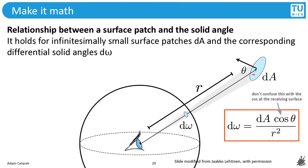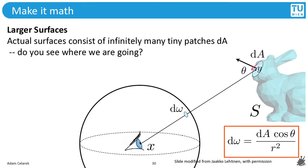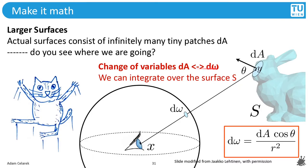The relationship between the surface patch and the solid angle can be described using this formula: d omega equals dA cosine theta over r squared. Don't confuse this cosine with the cosine of the receiving surface, which would be here. This cosine is measured over here. This relationship holds for infinitesimally small surface patches dA and the corresponding solid angle d omega. For larger surfaces we would have to integrate over the whole surface and use many small tiny patches dA. Do you see where we are going towards? Change of variables from dA to d omega. We can integrate over the surface of S, so over the light source, instead of integrating over the unit hemisphere.